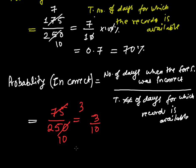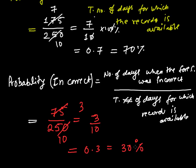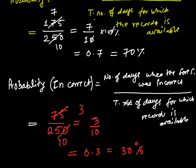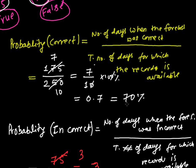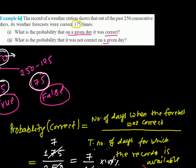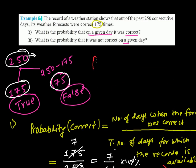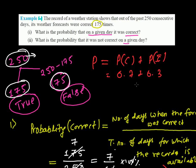In decimal form the probability of an incorrect prediction is 0.3, and in percentage form it is 30 percent. So the probability of an incorrect forecast is 30 percent and the probability of a correct forecast is 70 percent. Overall: 0.7 plus 0.3 equals 1, and in percentage form 70 percent plus 30 percent equals 100 percent.